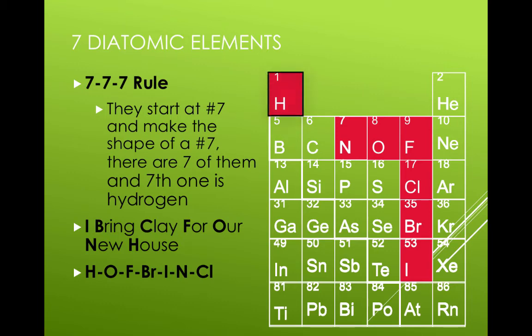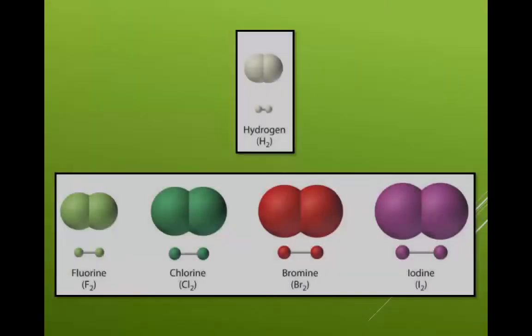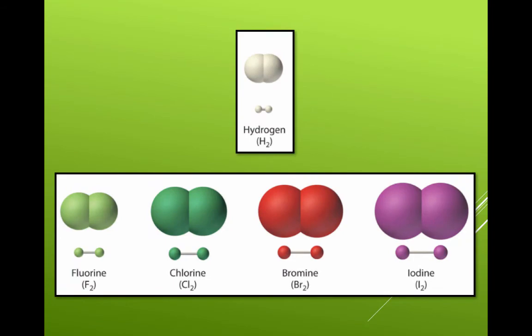Hydrogen plus the halogens, fluorine, chlorine, bromine, and iodine, are all missing one valence shell, so they form single bonds with one another to complete their valence shells.